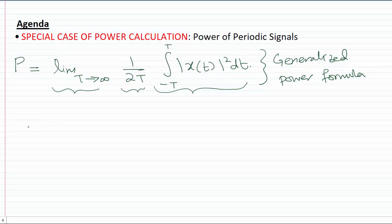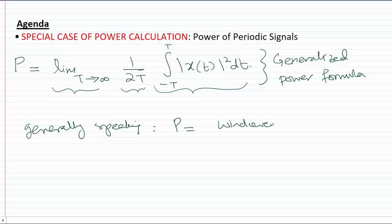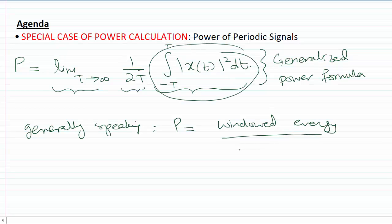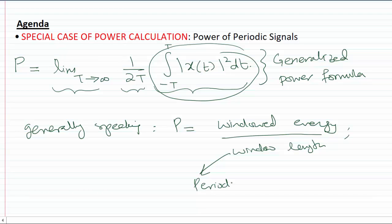Generally speaking, the power is the windowed energy divided by the window length, and you have to make sure the window length is as large as possible. Whereas in the case of periodic signals, we don't have to take large windows — all we have to do is take the window length equal to the period of the periodic signal.